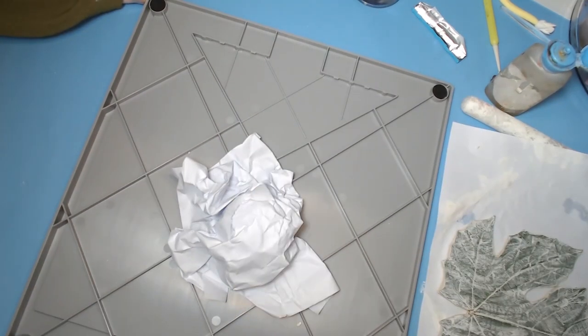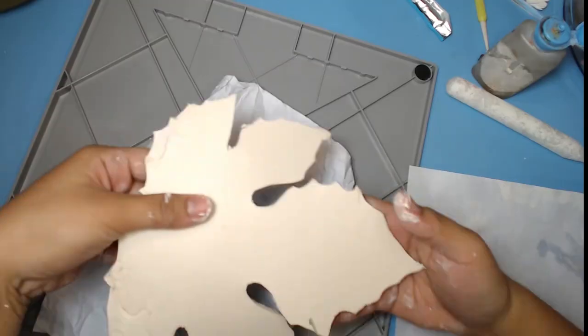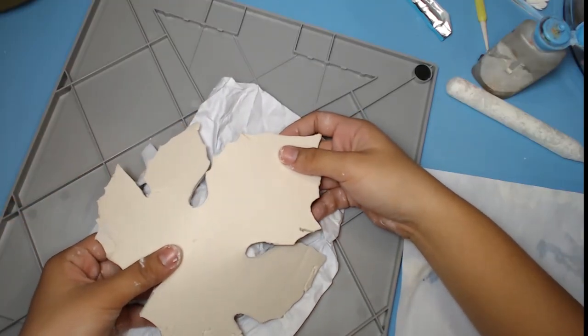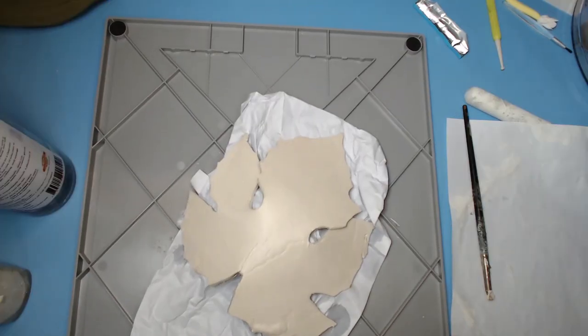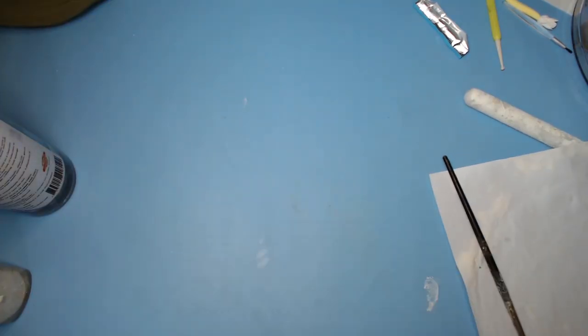Layer scrap paper to add volume to the trinket like a plate or bowl. Carefully put the trinket on top and let it dry for 16 hours.